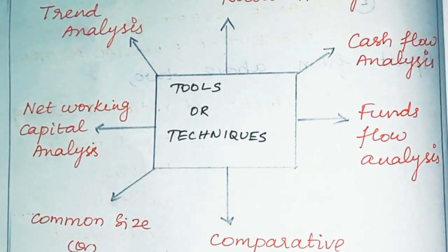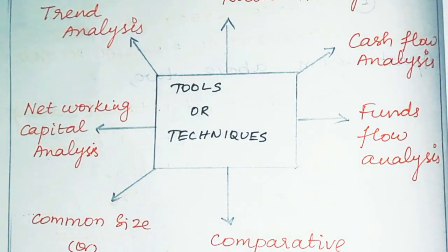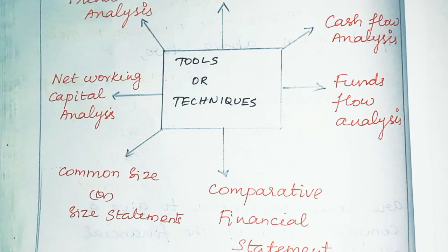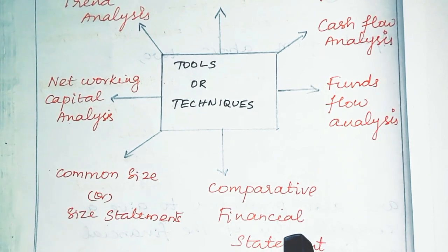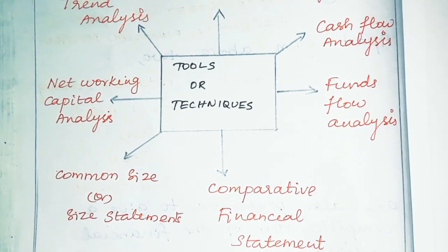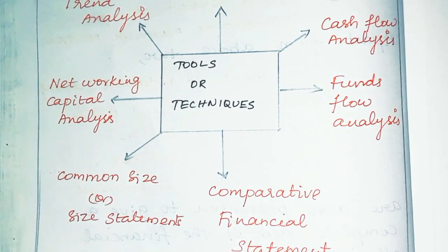Next is the comparative financial statement. In the comparative financial statement, we have two types: the comparative balance sheet and the comparative income statement. After that is the common size statement, which uses vertical analysis.